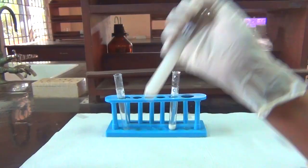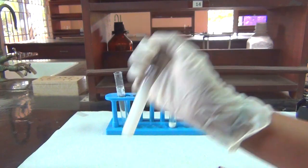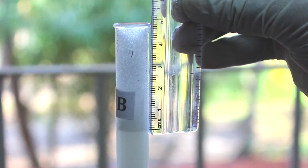Shake test tubes A, B and C equal number of times and in the same way without spilling any soap solution. Immediately measure the length of foam produced.